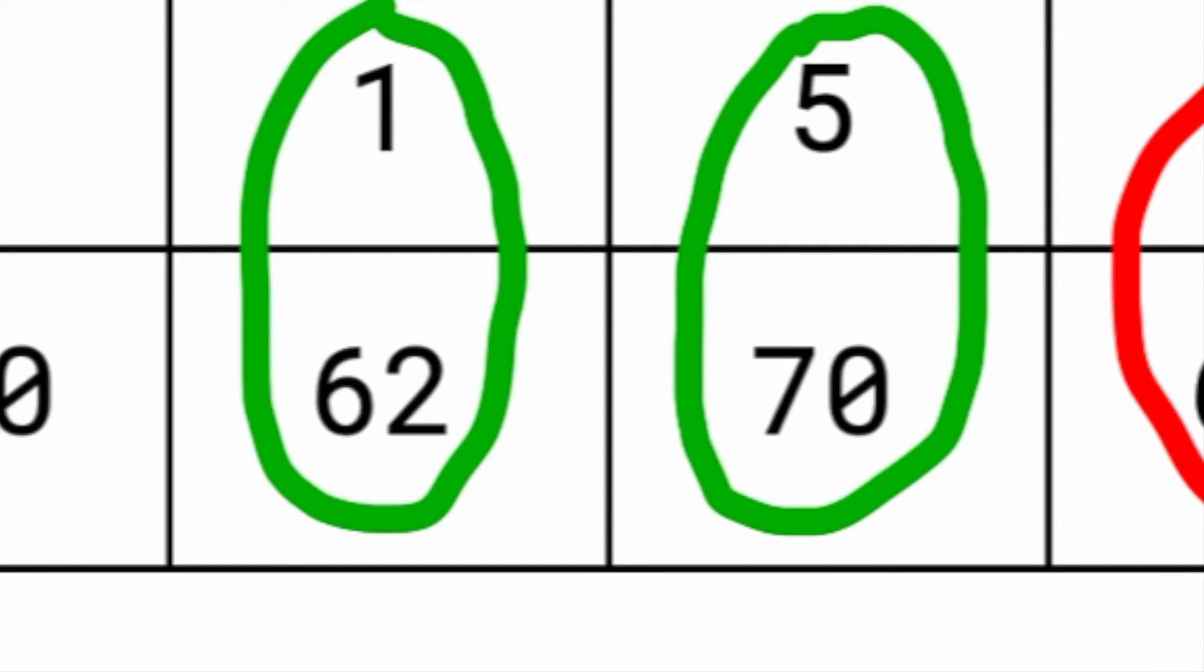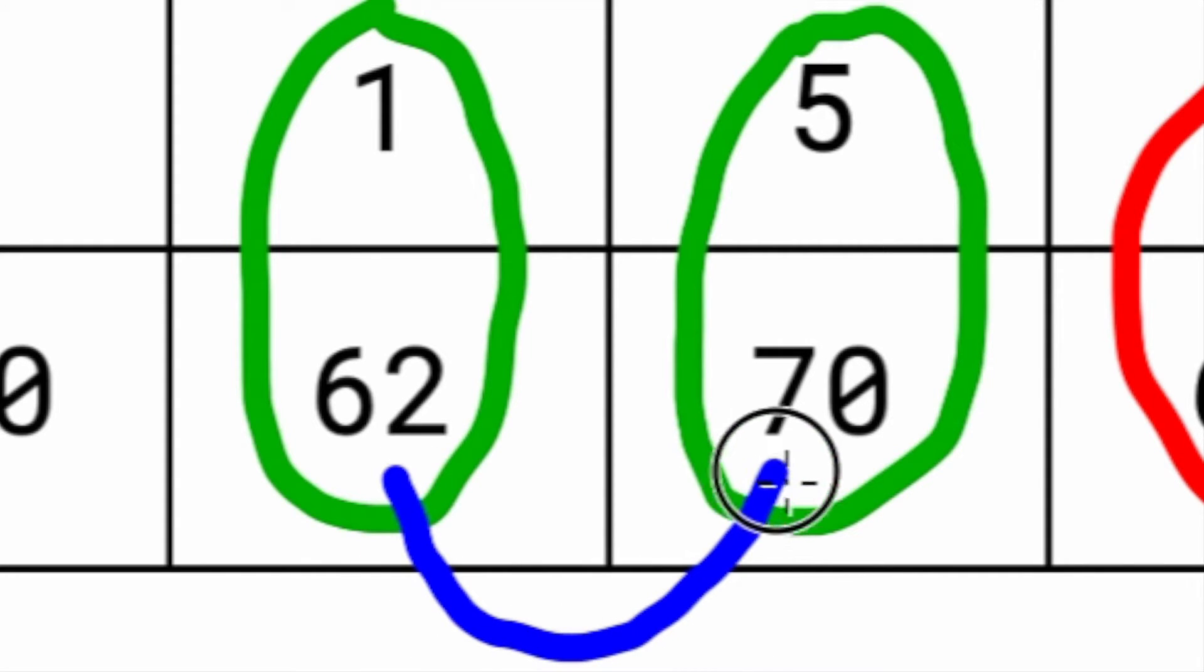If you notice, for these values it goes from 62 to 70. So in this case it actually goes up. You're going to have positive slope for the second one and negative slope for the first one. It's one of those things to be on the lookout for as you're doing the problem.